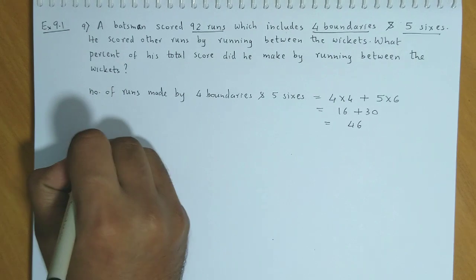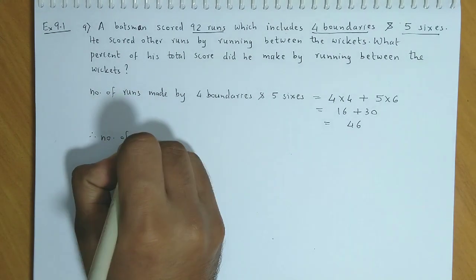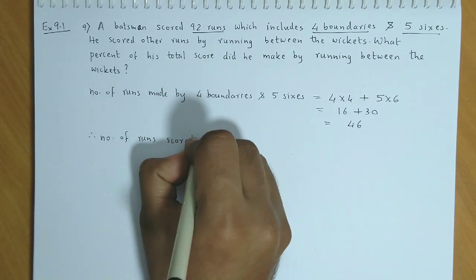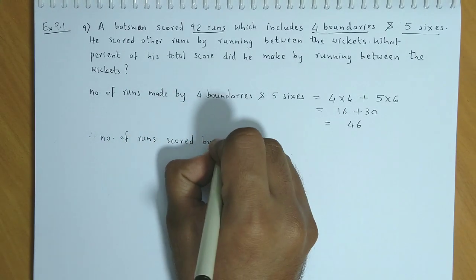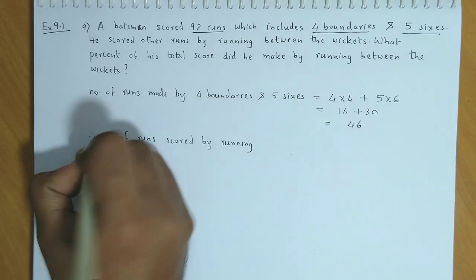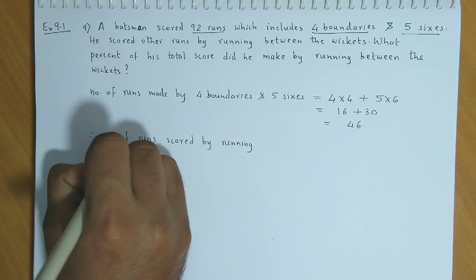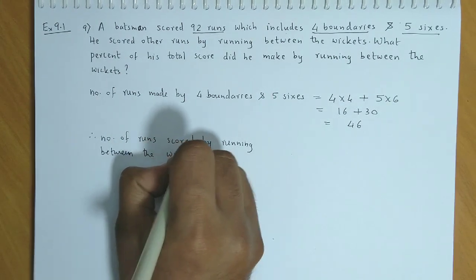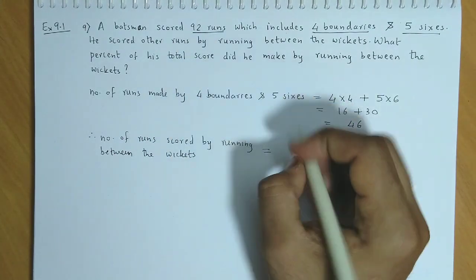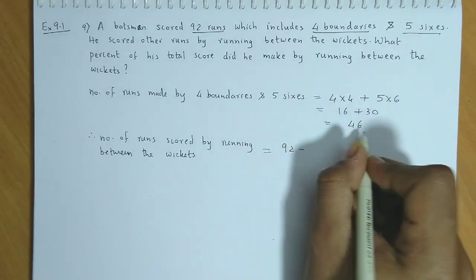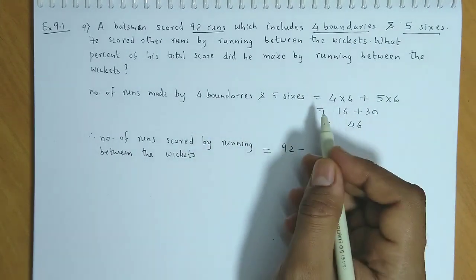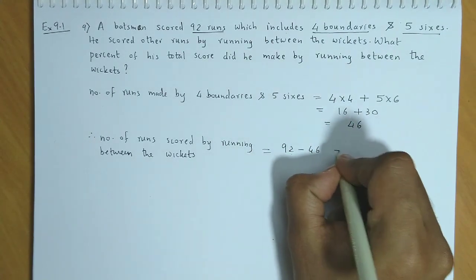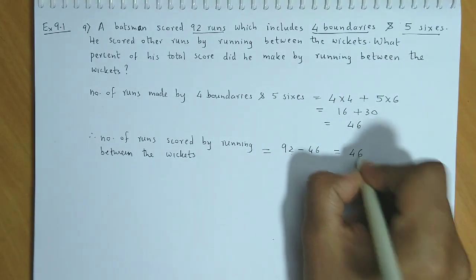Therefore, the number of runs scored by running between the wickets: total score is 92, and 46 runs were scored by boundaries and sixes, so the remaining runs scored by running between the wickets is 92 minus 46, which is 46.